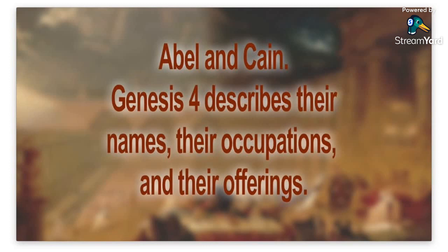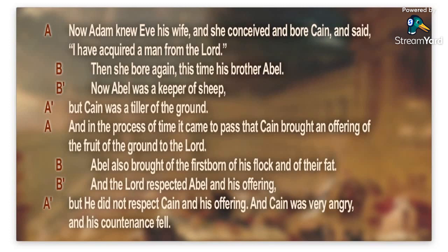Abel and Cain in Genesis 4 have a description of their names, occupations, and offerings in chiastic structure. A is about Cain and B is about Abel: 'Adam knew his wife Eve, and she conceived and bore Cain,' then 'she bore again his brother Abel. Now Abel was the keeper of sheep, but Cain was the tiller of the ground.' Then the process repeats: Cain brought an offering, then Abel brought an offering. You can see how it moves Cain first, then Abel, then Cain — then Cain again, then Abel, and finally Cain again. That is the parallel structure of Genesis chapter 4.